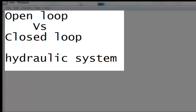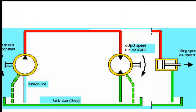Let's see the difference between open and closed loop in a hydraulic system in simple terms. In an open system, the hydraulic pump sucks the oil from the tank and pushes it to the actuator.